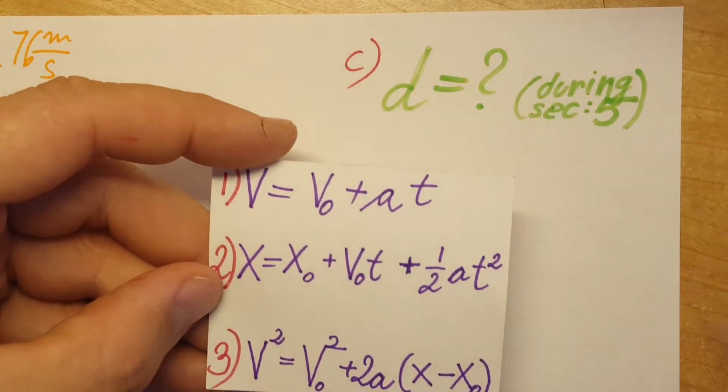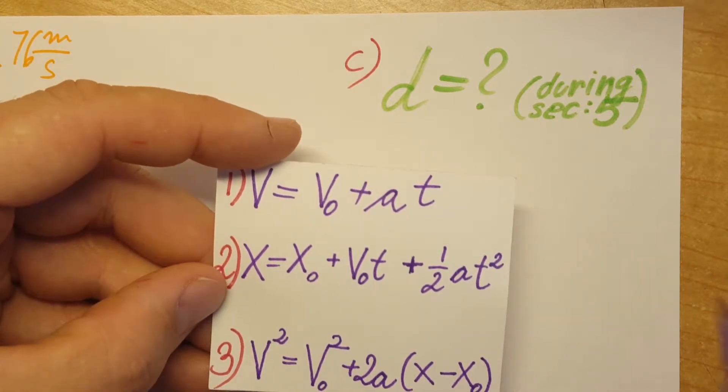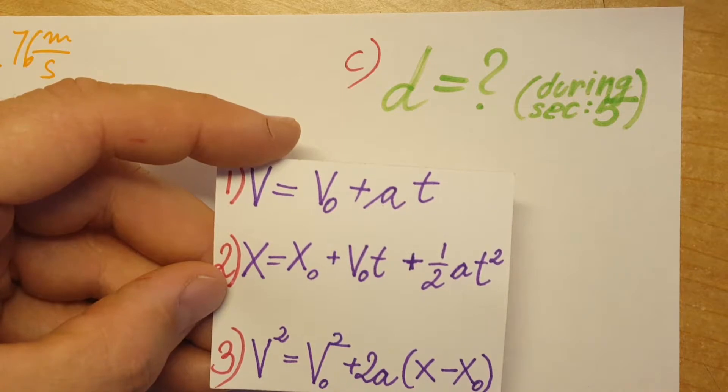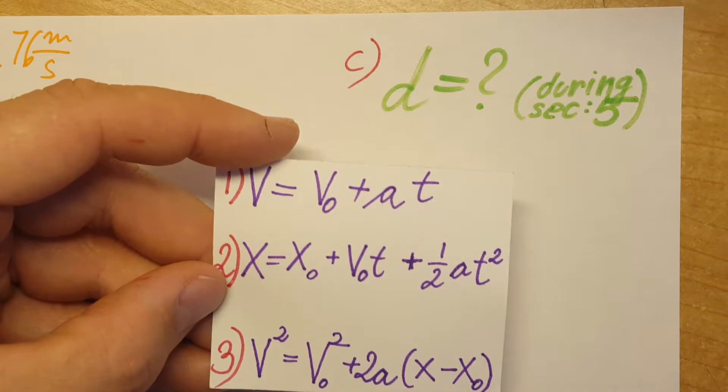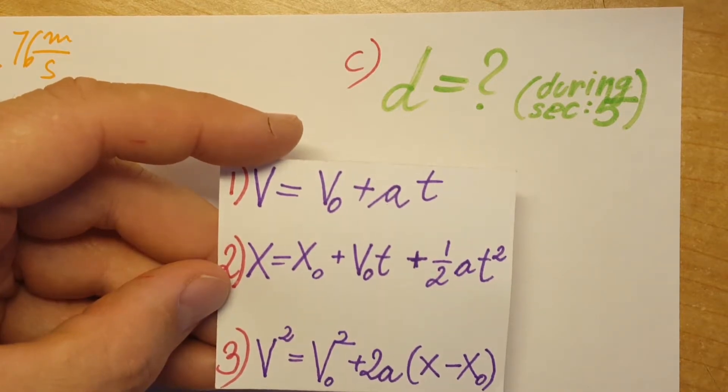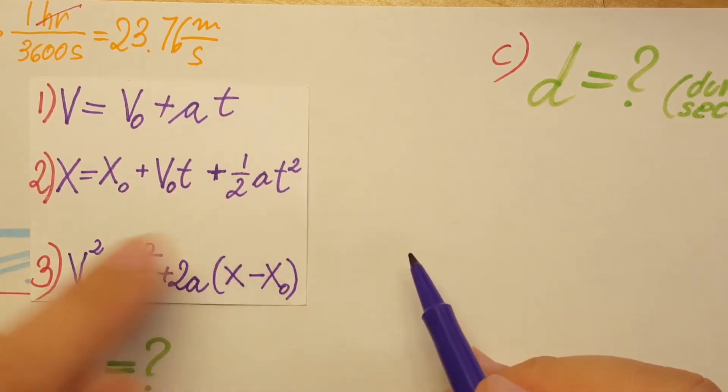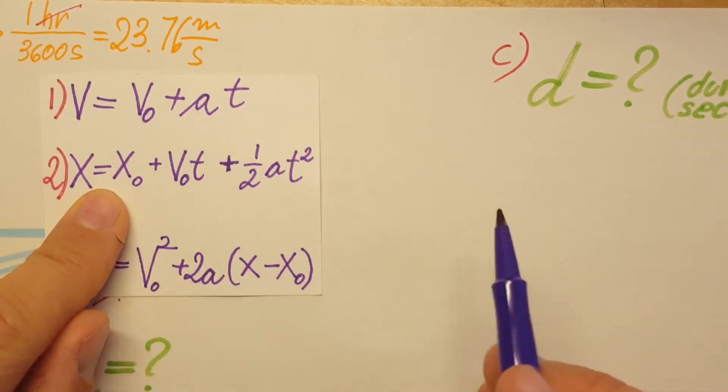Now in part C, they're asking us to find the distance the car will roll during the fifth second - not in the first five seconds, just during the fifth second. We're gonna use formula number two. The game plan is to calculate the distance at second five, then subtract the distance at second four.